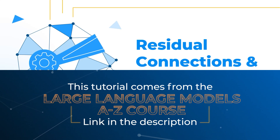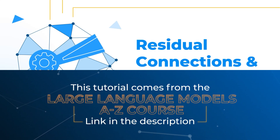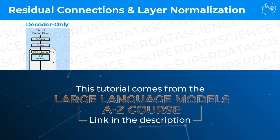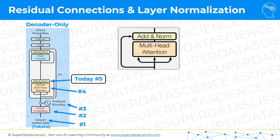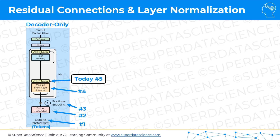Hello and welcome back. Today we're talking about residual connections and layer normalization. Just to recap where we are, we've talked about tokens or inputs, input embedding, positional encoding, multi-head attention — we had a few videos on that — and today we're talking about residual connections and layer normalization. In fact, there are quite a few of them in the transformer architecture and the principles we'll discuss today apply to all of them.